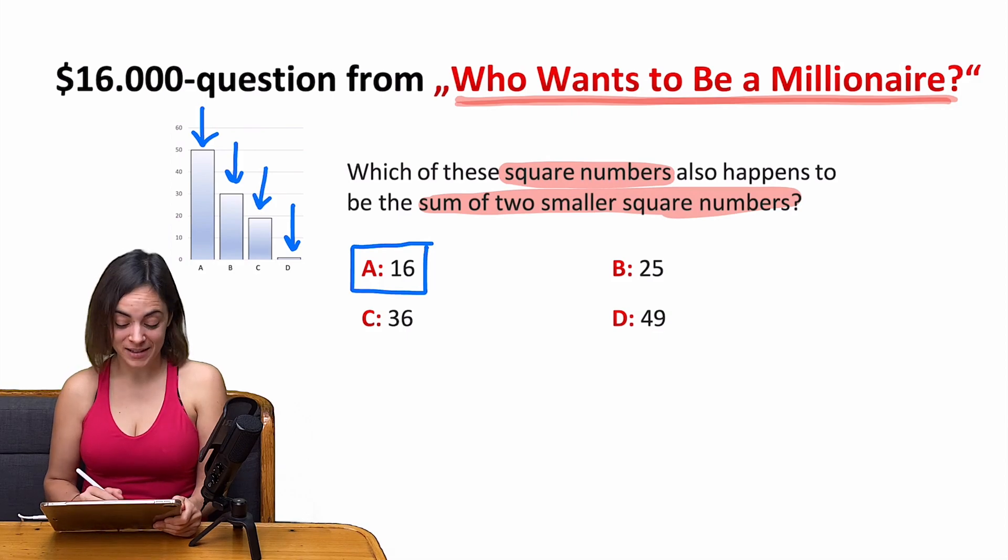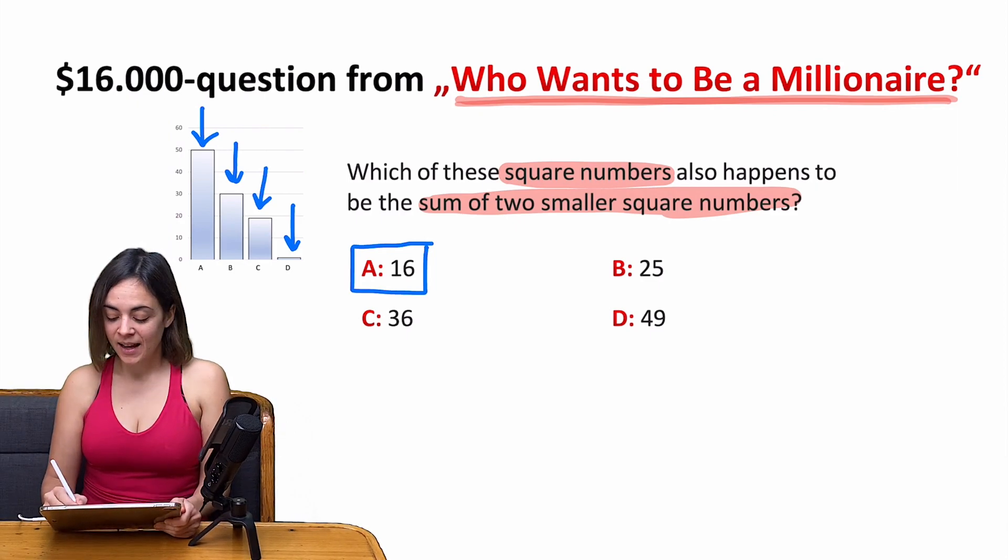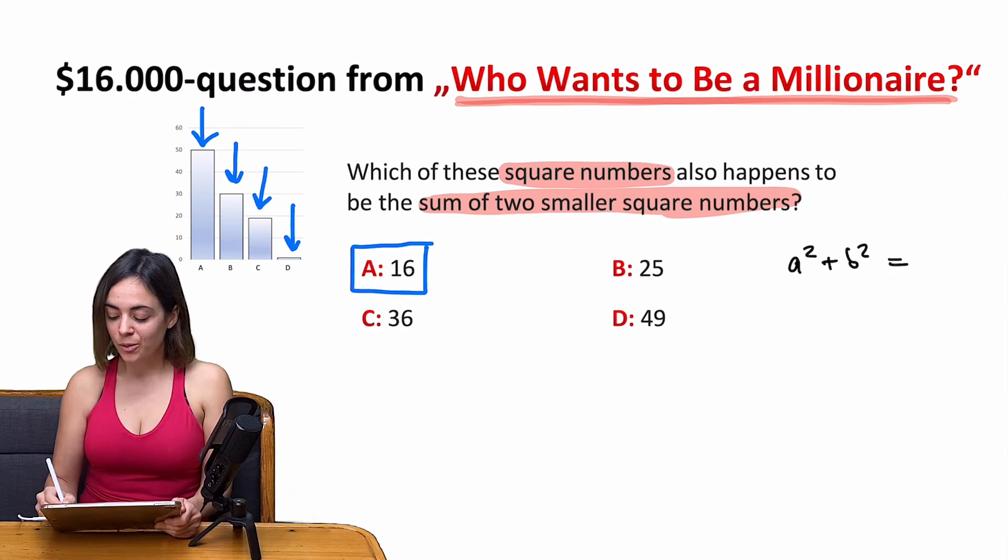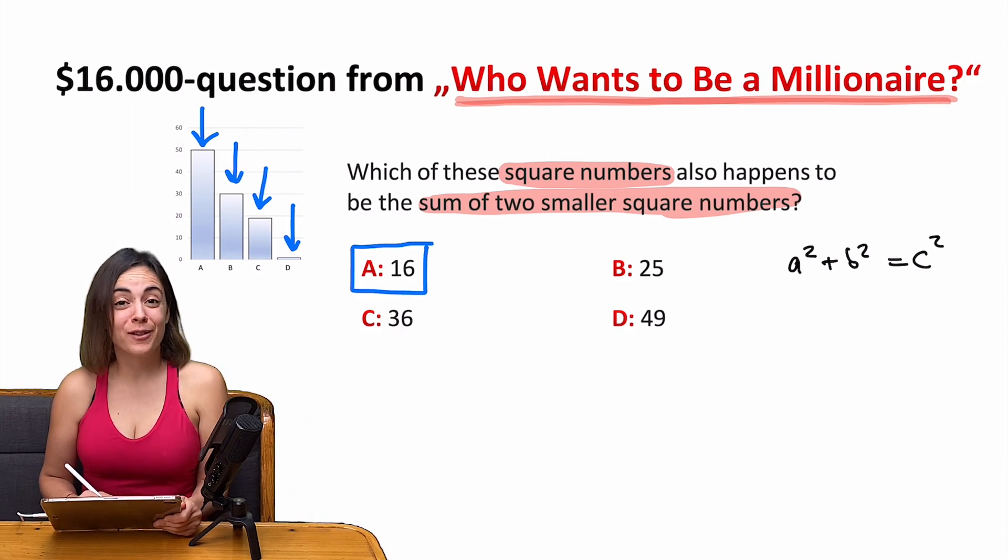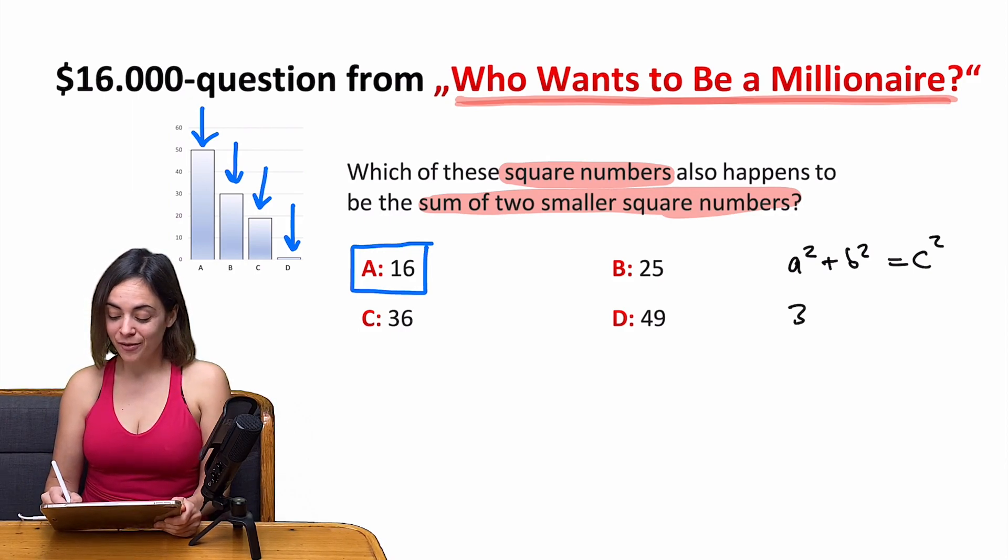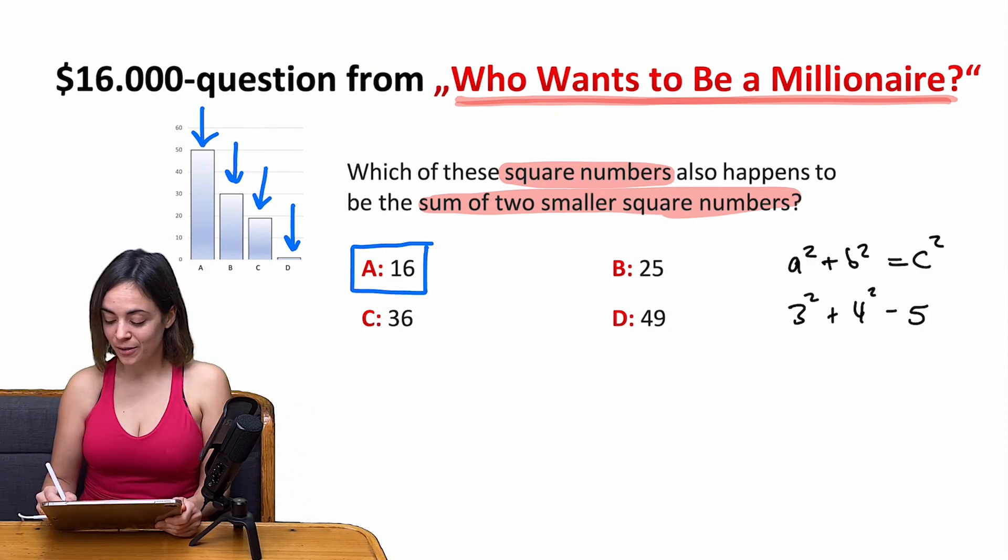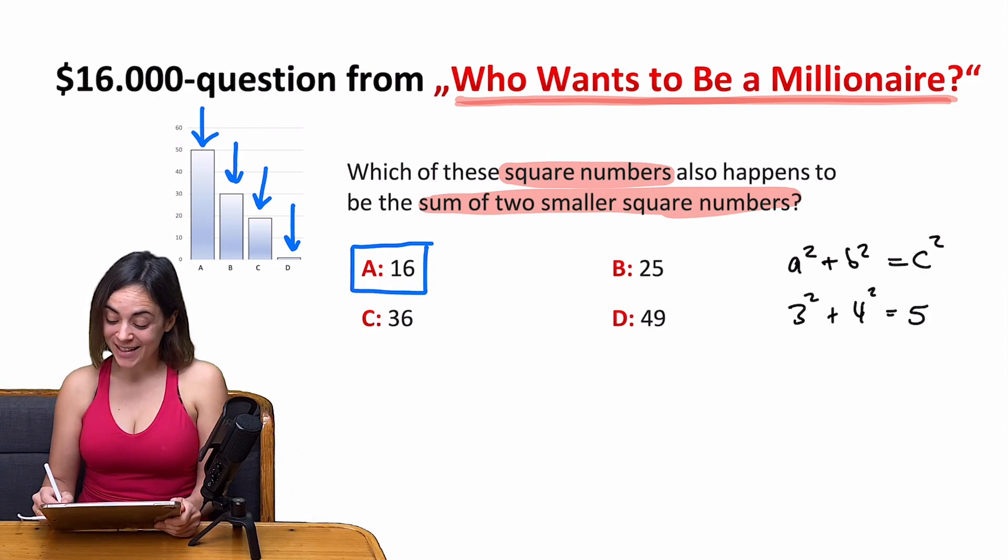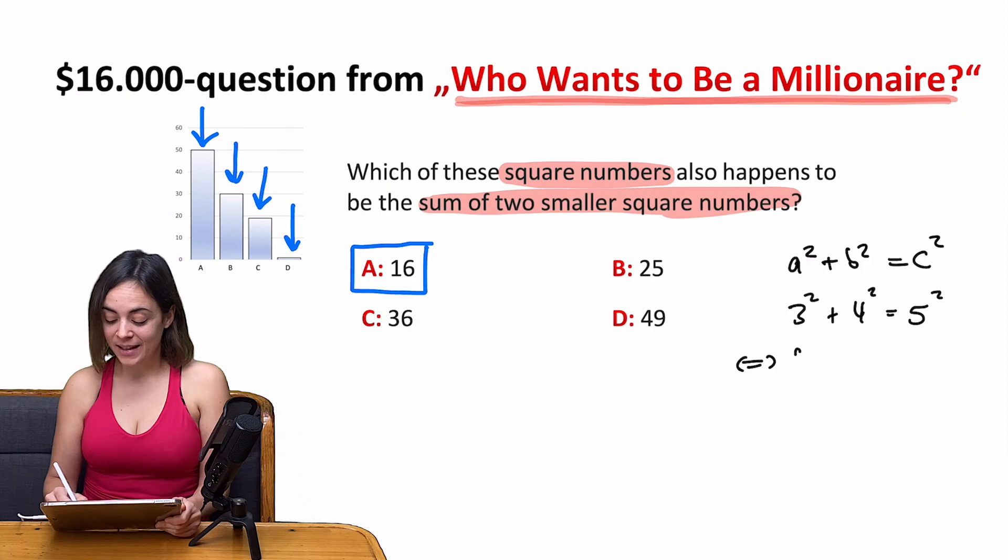And that's quite a pity because as we all know, the Pythagorean theorem is quite easy to remember and it says a squared plus b squared equals c squared. And one of the most well-known triplets fulfilling this equation is 3, 4, and 5. So 3 squared plus 4 squared equals 5 squared. And this means that 9 plus 16 is 25.